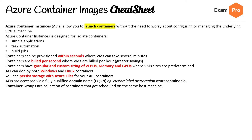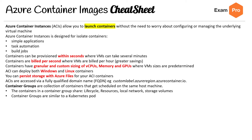Container groups are a collection of containers that get scheduled on the same host machine. Containers in a container group share lifecycle resources, local network, and storage volumes. Container groups are similar to Kubernetes pods. Multi-container groups currently support only Linux containers — this is one of the cases where it's Linux, not Windows.